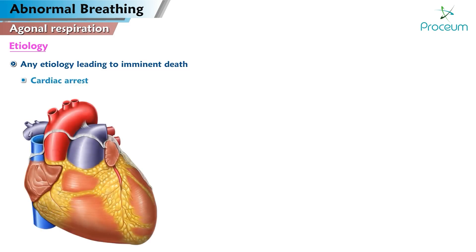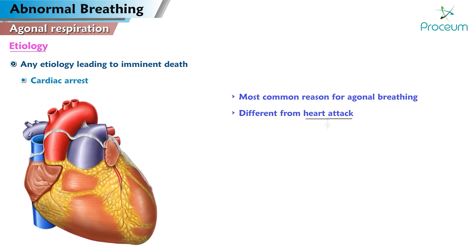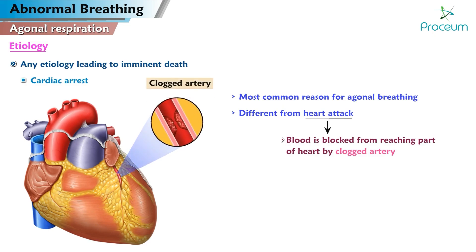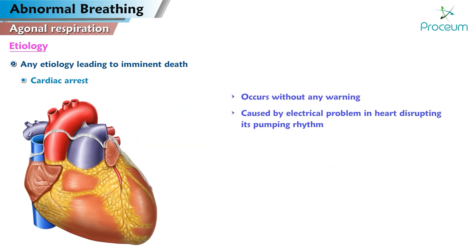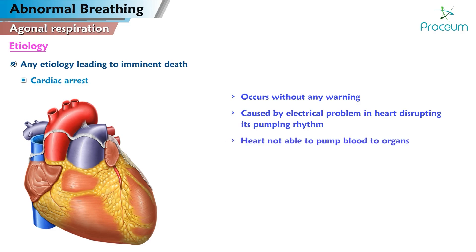Cardiac arrest is the most common reason for agonal breathing. It is different from a heart attack, although they can be related. A heart attack happens when blood is blocked from reaching part of your heart by a clogged artery, and the part of the heart that gets blood from the blocked artery starts to die. Cardiac arrest typically occurs without any warning. It is caused by an electrical problem in the heart which disrupts its pumping rhythm. The heart is not able to pump blood to your organs, which will cause you to lose consciousness and die within minutes without treatment.